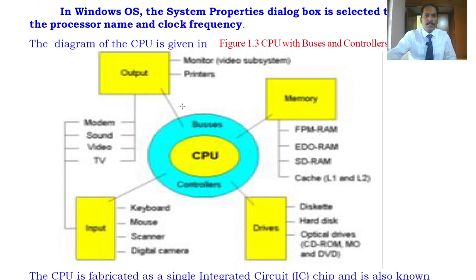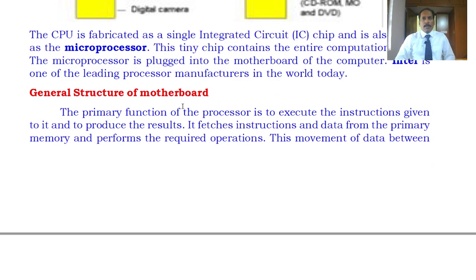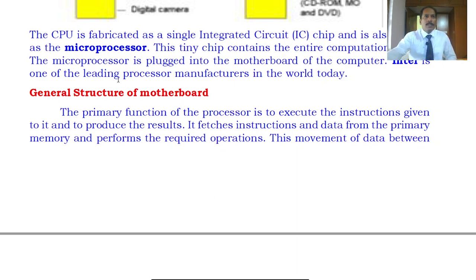To identify your processor, you can right-click on Properties and see the processor clock speed. The CPU is the central processing unit — the main processor. It is a single integrated circuit which is responsible for performing all the operations required by the user. That's why it's also called the brain of the computer. A CPU fabricated as a single integrated circuit is also known as a microprocessor.